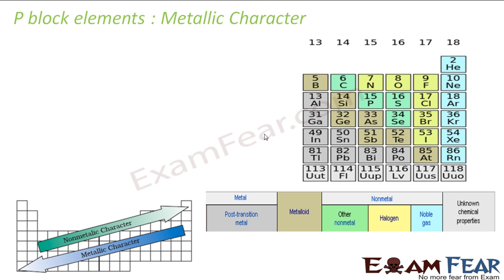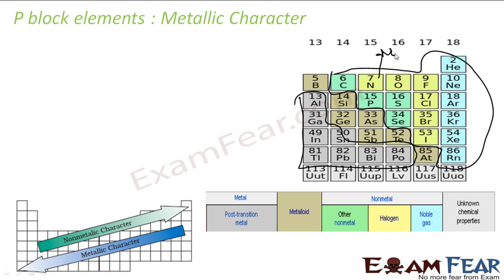Regarding metallic character: going from left to right and from bottom to top, non-metallic character increases. In the P-block, metals are on the left/lower side, metalloids are in the middle diagonal, and non-metals are on the right/upper side. You go from metal to metalloid to non-metal across the block.